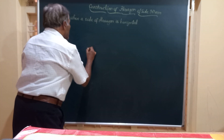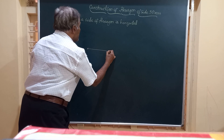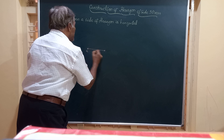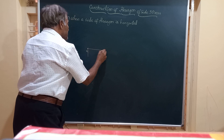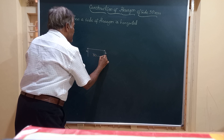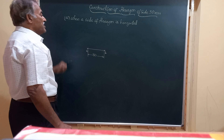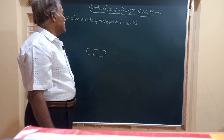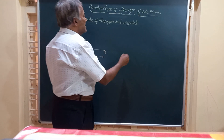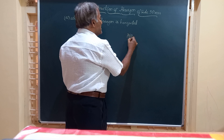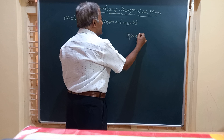For this, I am going to draw a horizontal line AB measuring 30 millimeters, since one of the edges should be horizontal. For a hexagon there are six sides, so the exterior angle will be 360 divided by 6, that is 60 degrees.